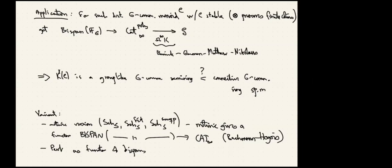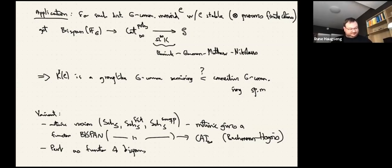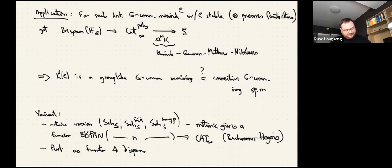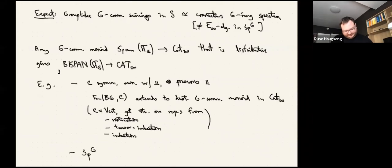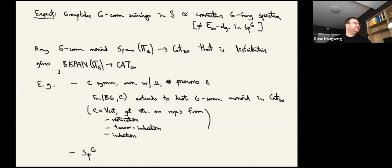Question from the audience: how hard is it to show that group-like G-commutative semirings are connective G-commutative ring spectra? I have some idea of how to prove the non-equivariant version — David Gepner and I were discussing this at MSRI last March but never finished. I'm fairly confident that idea should work. For the equivariant case I'm less sure, though Dennis Nardin's thesis works out a relevant component, so maybe it's doable.